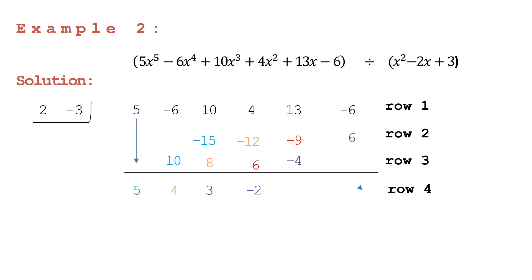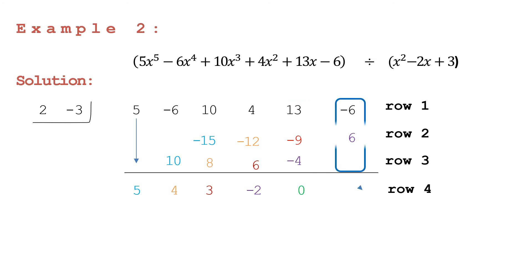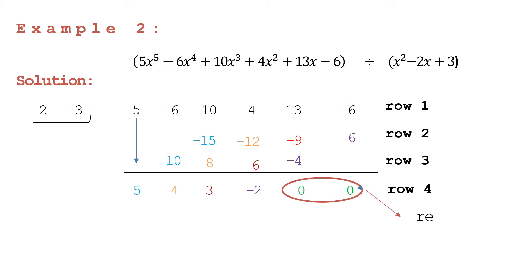Then add the fifth column: positive 13 plus negative 9 is equal to positive 4, and positive 4 plus negative 4 is equal to 0. Since this is already 0, no need to multiply that again. Let's just add the last column: negative 6 plus 6 is equal to 0. Our two zeros here are our remainder.